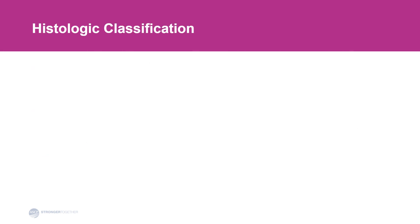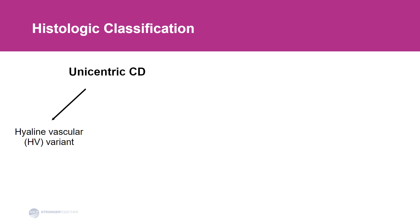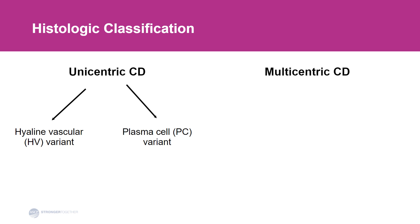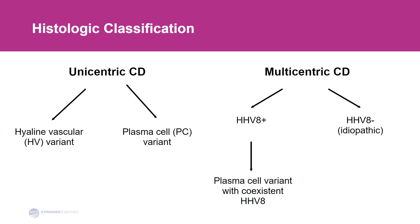Histologic classification of Castleman disease is a little bit different. Unicentric Castleman disease is most commonly of hyaline vascular variant and occasionally of plasma cell variant. Multicentric Castleman disease can be HHV8 positive or HHV8 negative, which is also called idiopathic. HHV8 positive Castleman disease has a histology of plasma cell variant, but we can also demonstrate HHV8. HHV8 negative or idiopathic Castleman disease also has a histology of plasma cell variant.